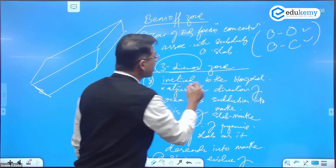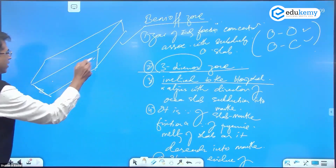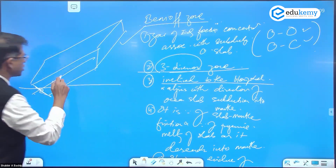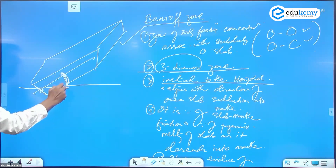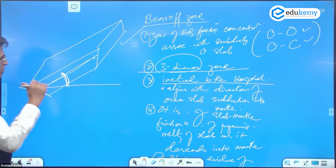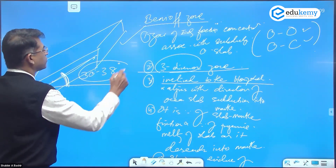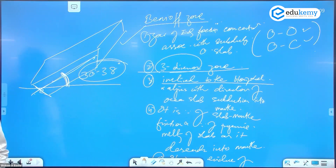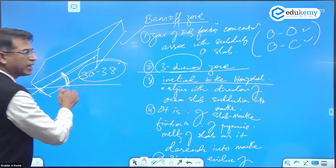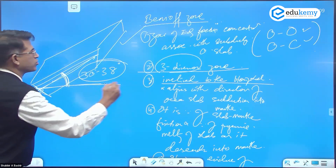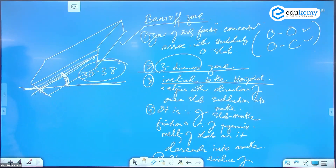It is inclined to the horizontal plane. The angle is approximately around 30 to 38 degrees. If you know a bit of physics, it's what's called the angle of repose — the angle at which something comes to rest naturally. It is inclined at this angle with the horizontal.